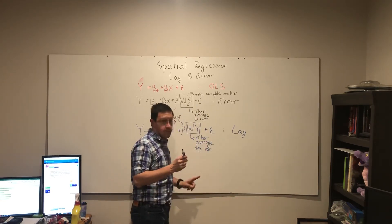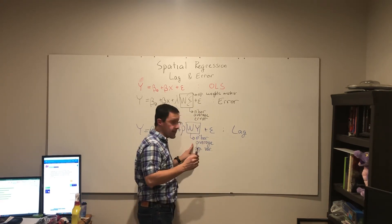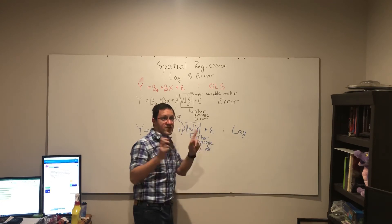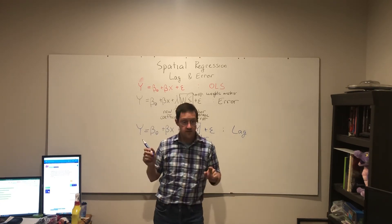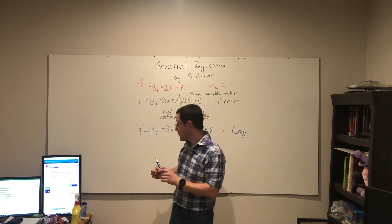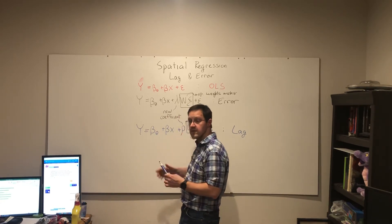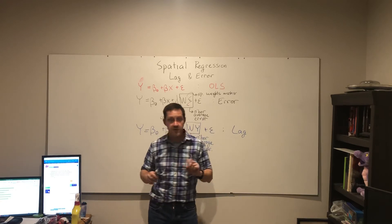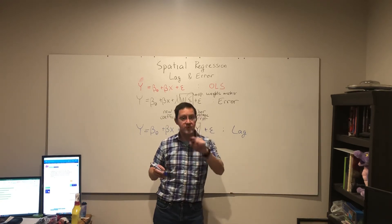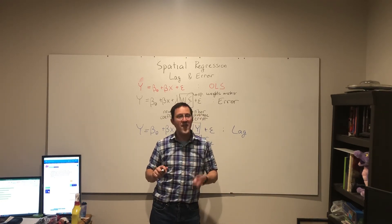Still have our error term of course, but now saying go look at the neighbor's average COVID rate. Again interpreting if this rho is a positive coefficient. If that is positive, then I say if my neighbors have a high rate, then I should too.